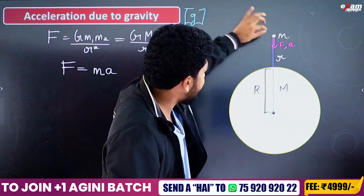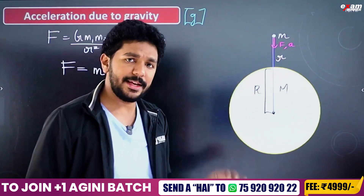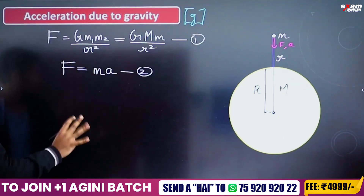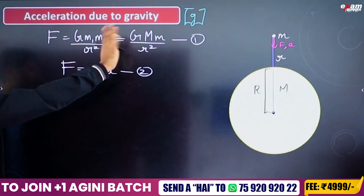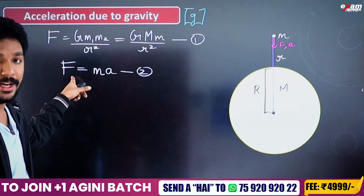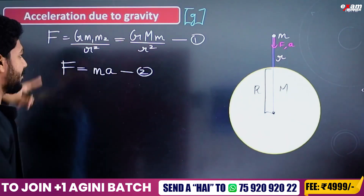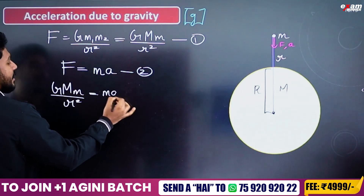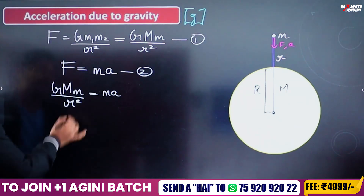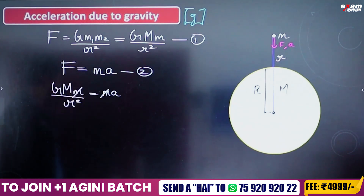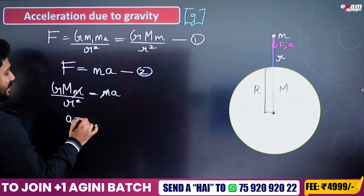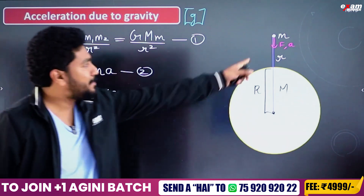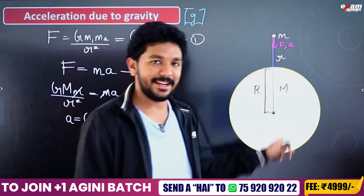If the gravitational force is acting on the object, that force equals mass times acceleration. So F equals m times g. Now equating the two expressions, the small mass m of the object cancels out on both sides. Therefore, acceleration due to gravity is independent of the mass of the object.